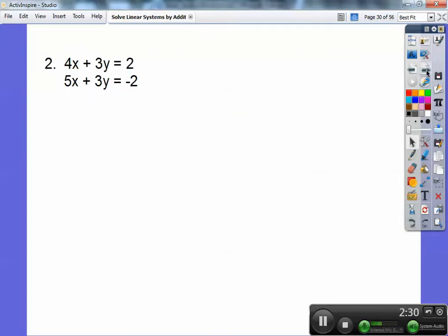So here you have 4x plus 3y equals 2 and 5x plus 3y equals negative 2. If I could change one of these equations to a negative 3y, then I could just add them together like I did the last one.